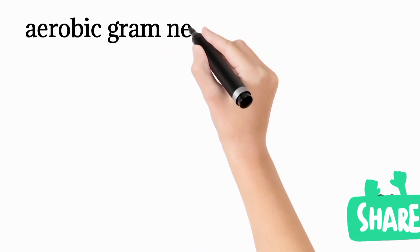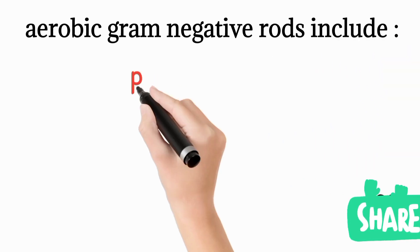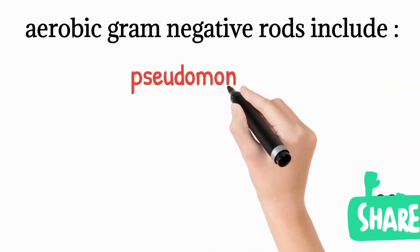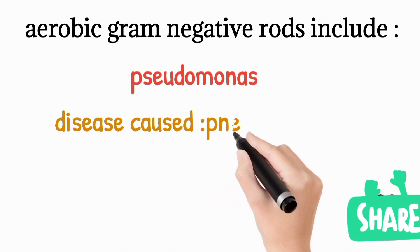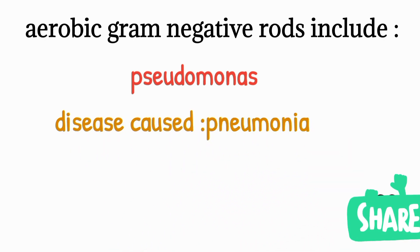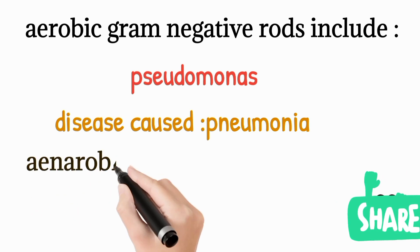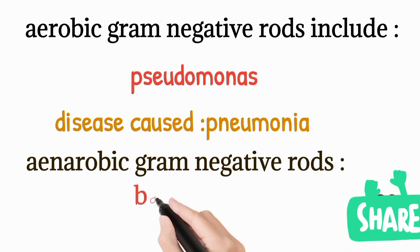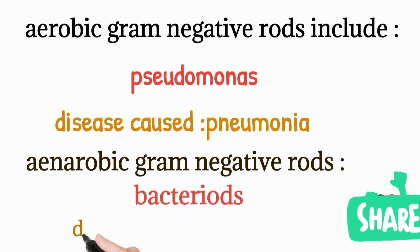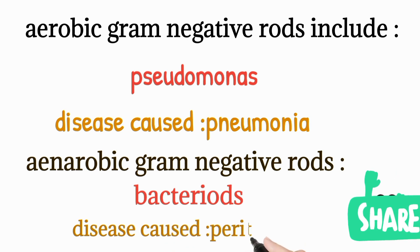Aerobic gram negative rods include Pseudomonas as the best example, and the disease caused by Pseudomonas is pneumonia affecting the lungs. Anaerobic gram negative rods, which do not require oxygen, have Bacteroides as the best example, and the disease caused by Bacteroides is peritonitis.